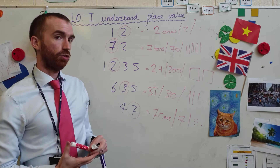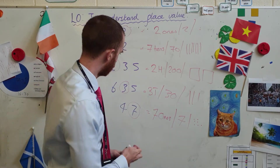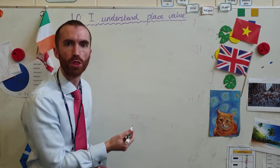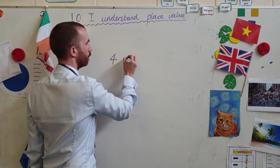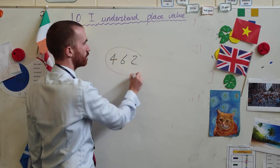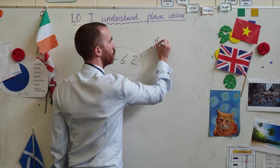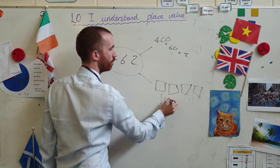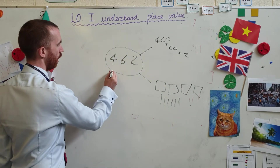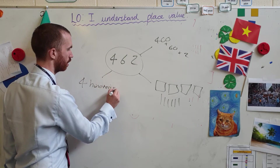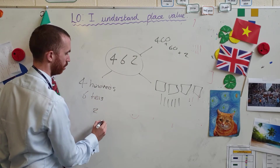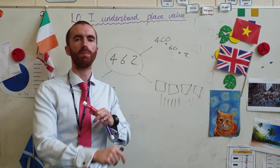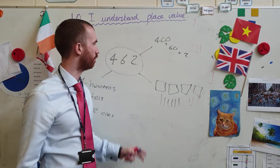So what I'd like you to do on a sheet — you're going to pick a number and around it make a sort of spider-gram. Start with a 3 or 4-digit number. I'm going to do 4 digits — let's say 462. Then see how many ways you can show this number. I could say it's 400 plus 60 plus 2. I could draw it with squares, lines, and dots. I could say it's 4 hundreds, 6 tens, and 2 ones. See if you can find 5 or 6 different ways of showing the different values of each digit in that number. Off you go.